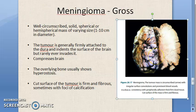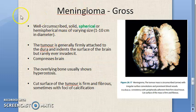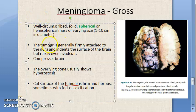Looking at the gross pathology - this is the outer surface and this is the cut surface from Harsh Mohan pathology. The tumor is well circumscribed, as expected for a benign tumor, and is a solid spherical or hemispherical mass of varying size. The tumor is firmly attached to the dura. It indents the surface of the brain - compressing it but never invading; if it invades it is called invasive meningioma.